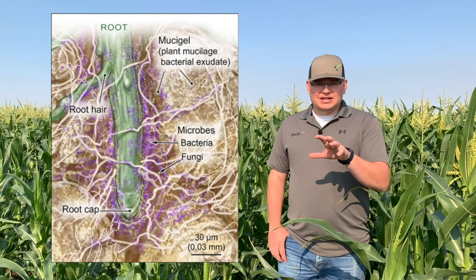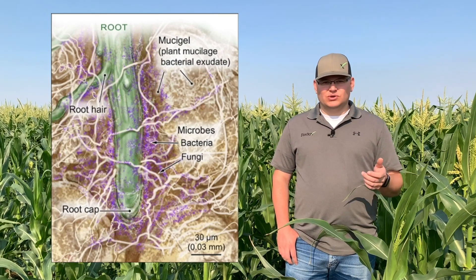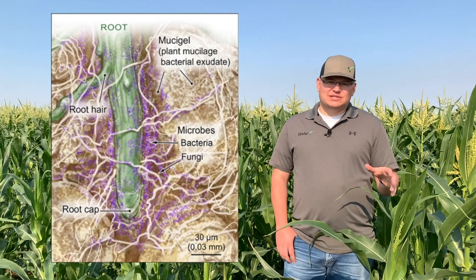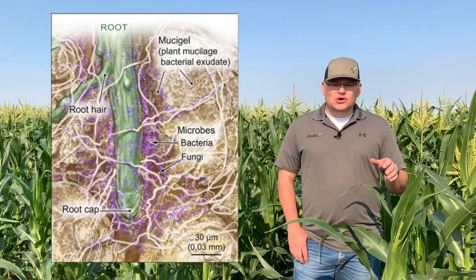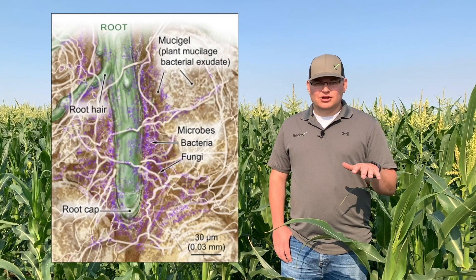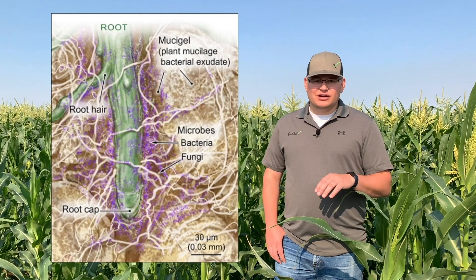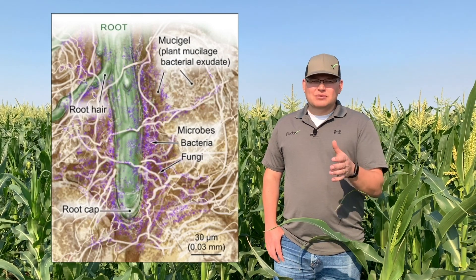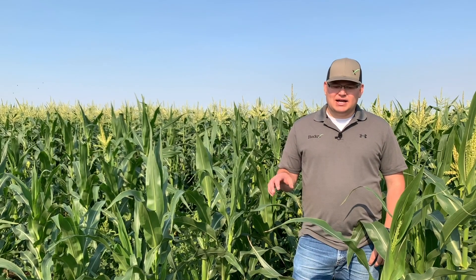Everything living in that rhizosphere helps mineralize nutrition in the soil through eating carbon, decaying, dying — the whole life cycle in that rhizosphere helps feed the plant. If we can help the plant by not having it spend so much energy pushing sugars out of the roots, and instead create a healthy rhizosphere where the plant doesn't need to sacrifice as much energy, we can put that energy into the crop and actually harvest it. Not all organic matter is equal — we're after that soluble carbon in the root zone.